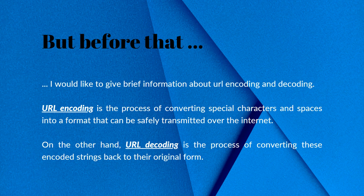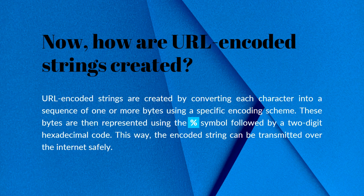URL encoding is the process of converting special characters and spaces into a format that can be safely transmitted over the internet. On the other hand, URL decoding is the process of converting these encoded strings back to their original form. Now, how are URL encoded strings created?